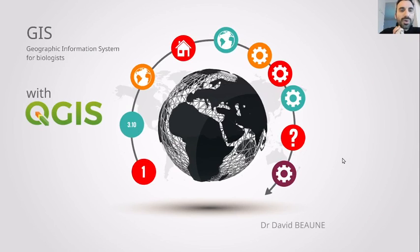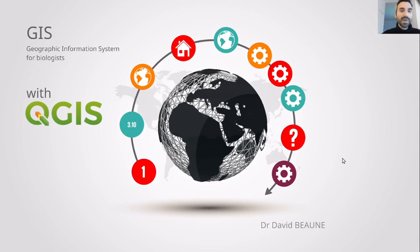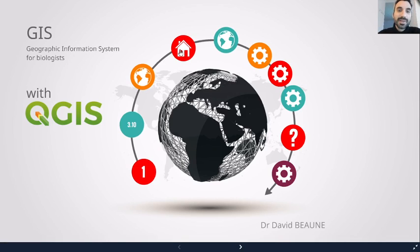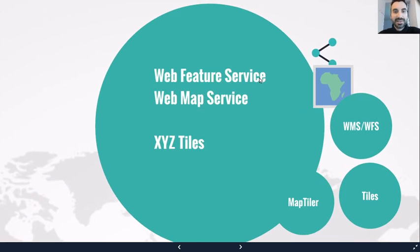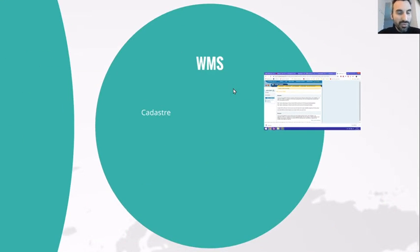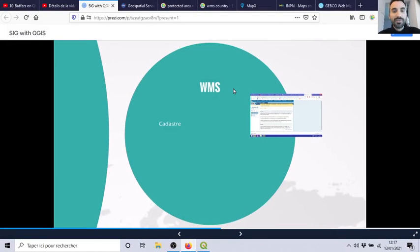Now I would like to show you another source of very cool maps. In a previous video, we saw together how to find some resources from shapefiles. From the web, sometimes they propose to you to load shapefiles. But sometimes they can propose to you web feature service or even web map service, or even XYZ, etc. What is WMS or WFS? Let's go together because it's quite useful to be able to load this kind of maps.